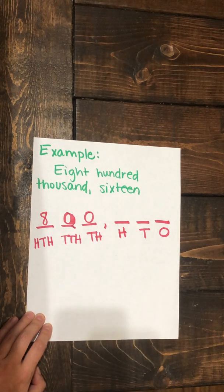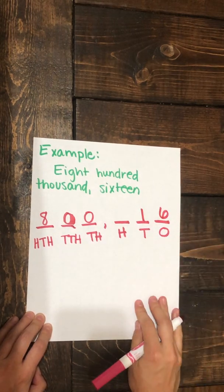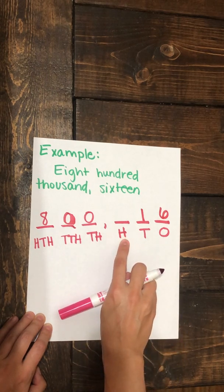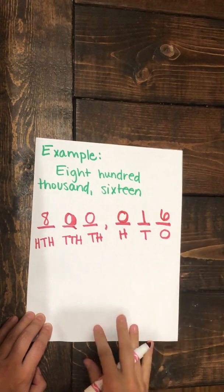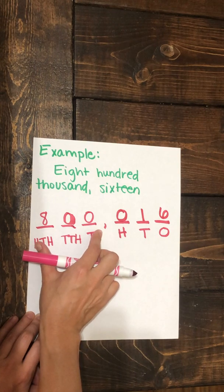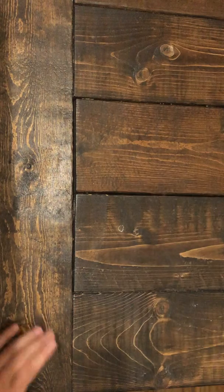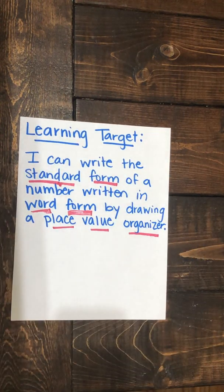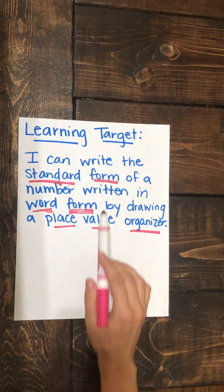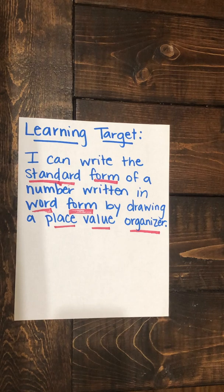My last part says 16. I know that 16 is one ten and six ones. I do not have a digit in my hundreds place, so I'll represent that with another zero. So now we have written the number 800,016 — here's our first cluster 800,000, then 16. Let's go back to our learning target: I can write the standard form of a number written in word form by drawing a place value organizer. Now you will try some on your own. If you need extra support, please watch the video again and stop and re-watch as needed. If you still need support, please reach out to your teacher.